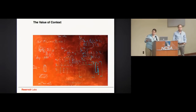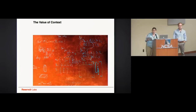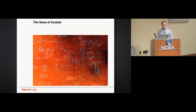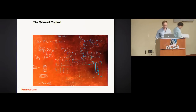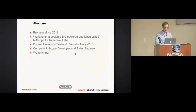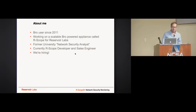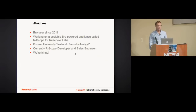Bob Rotstead is a senior engineer at Reservoir Labs. He specializes in secure systems design, intrusion analysis, and network forensics. As Jeanette said, we work on a scalable Bro-powered appliance called R-Scope. In a former life I was a network security analyst at a university, and now I work on R-Scope, sell R-Scope — and we're hiring.